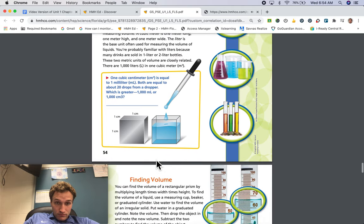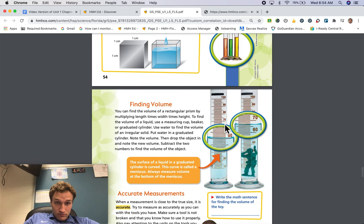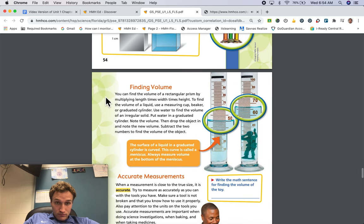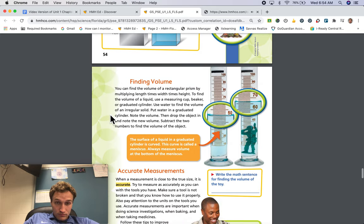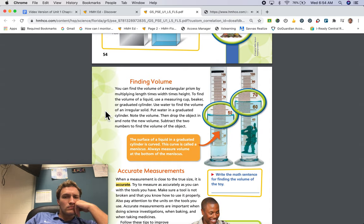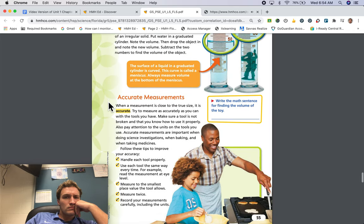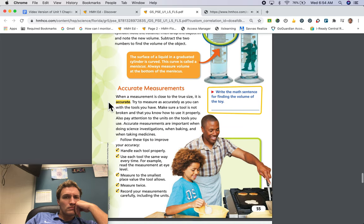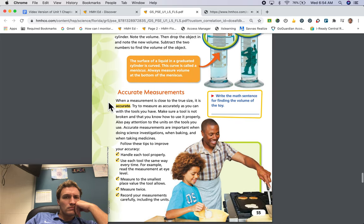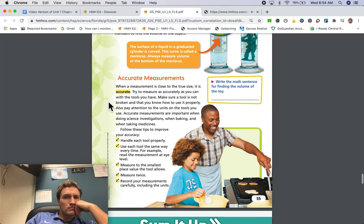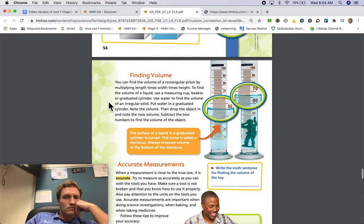Finding volume. You can find the volume of a rectangular prism by multiplying length times width times height. To find the volume of a liquid, use a measuring cup, beaker, or graduated cylinder. Use water to find the volume of an irregular solid. Put water in a graduated cylinder. Note the volume. Then, drop the object in and note the new volume. Subtract the two numbers to find the volume of the object. The surface of a liquid in a graduated cylinder is curved. This curve is called a meniscus. Always measure volume at the bottom of the meniscus.